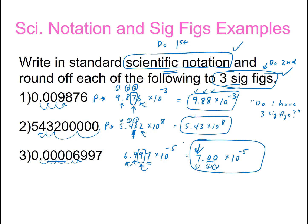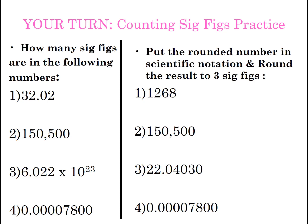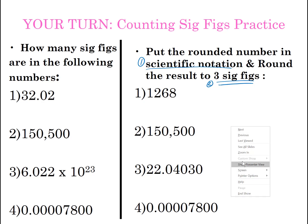Now it's your turn to do a couple examples. How many sig figs are in the following numbers? You're just counting sig figs on those. On the other ones, remember to put it in scientific notation first and then round to three sig figs second. That's the end of the video.